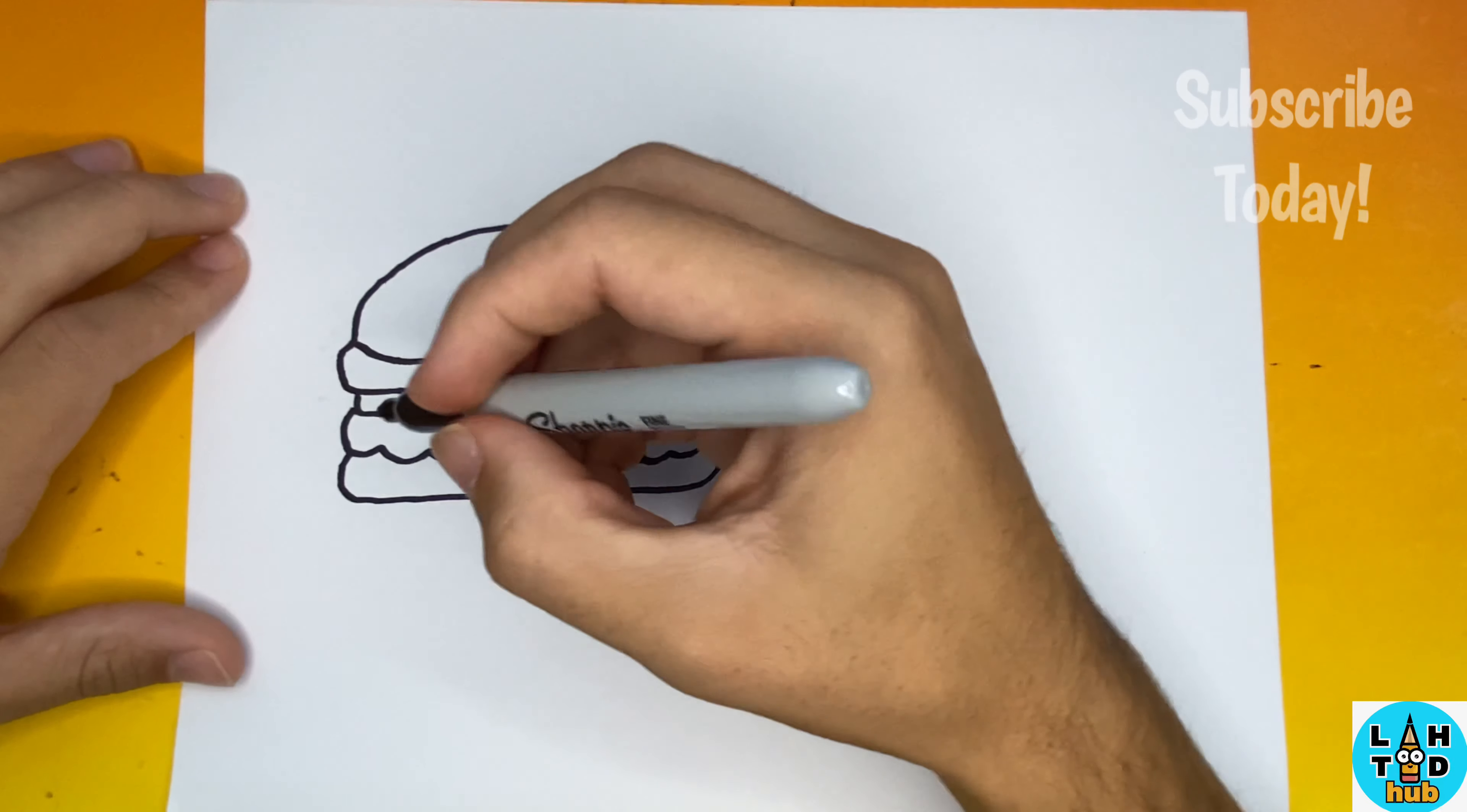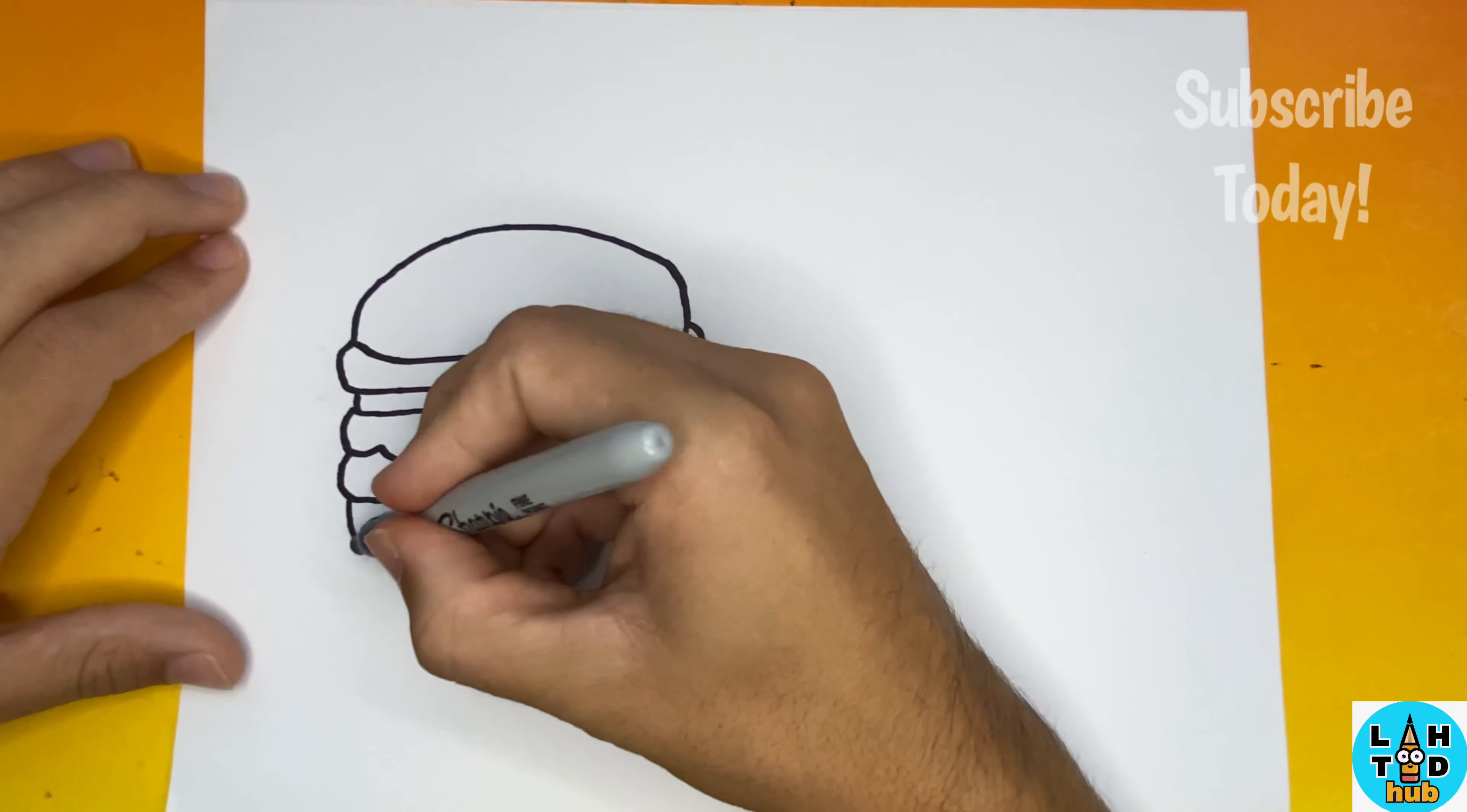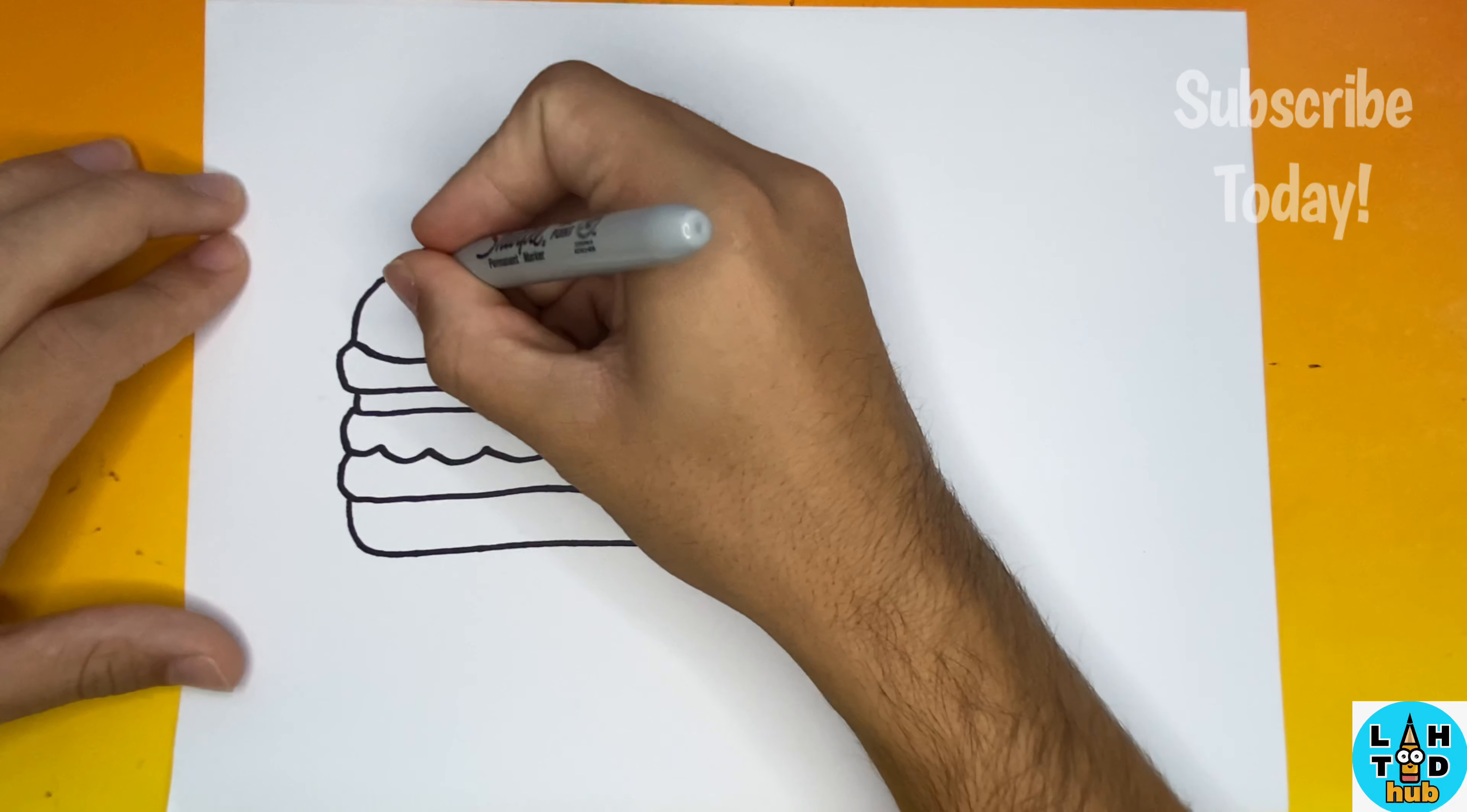So every hamburger that I've ever seen has two buns, so let's go ahead and make another bun at the bottom. Now to finish our hamburger we're going to go up to the top bun and we're going to add some seeds.